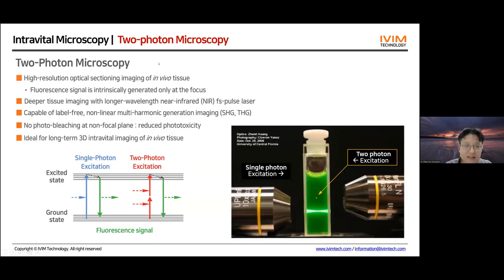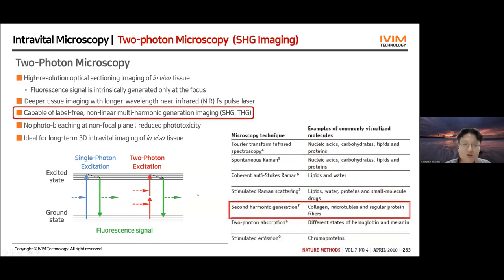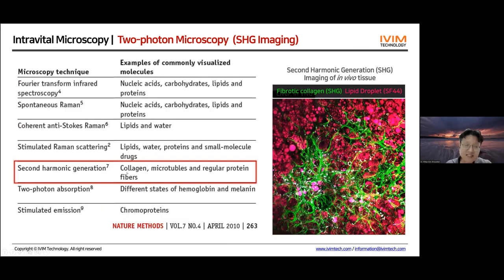Two-photon microscopy uses longer near-infrared wavelengths and provides better tissue penetration with optical sectioning similar to confocal. Additionally, two-photon microscopy can detect second harmonic generation (SHG) signal from collagen and other structural protein fibers in the mouse model without any additional labeling — a label-free imaging technique. The SHG signal is efficiently generated from collagen fiber bundles, making it very useful for visualizing fibrosis. This example is from a liver fibrosis mouse model, where all green represents accumulated collagen.